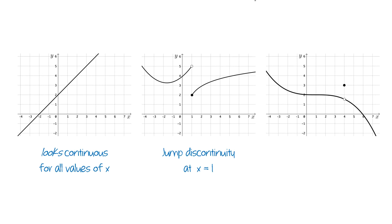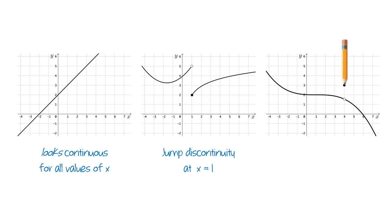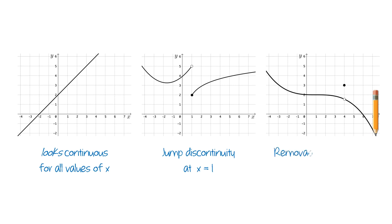For the third graph, we trace and it appears that we have to pick up the pencil to place the dot at x equals 4 before finishing the trace. So this looks like it's not continuous, and in particular, there is a removable discontinuity at x equals 4.